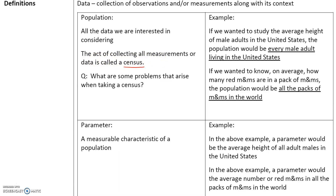You may have heard the term census. In the United States, we conduct a census once every four years in which someone goes door to door and asks how many people live in your house. This is done only once every four years because it's a very lengthy process to collect the data for every single household in the United States. A population study covers every single unit in the data we're considering.